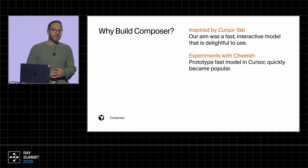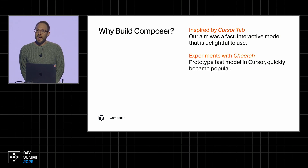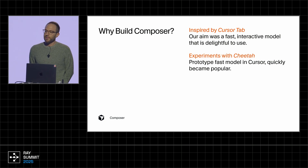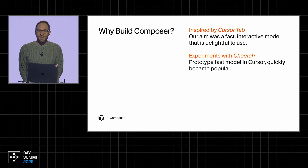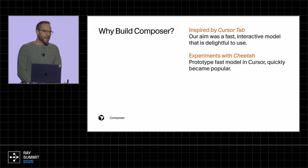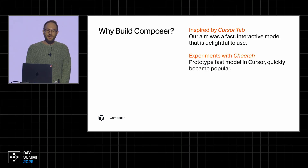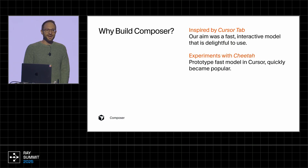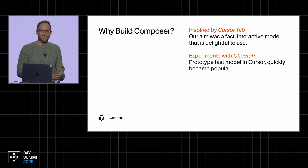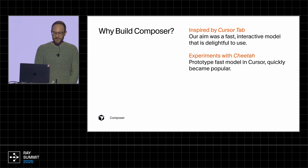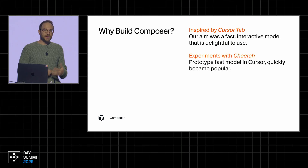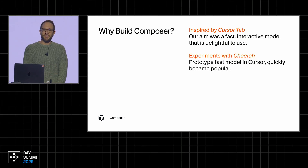We wanted to build an agent model that would have a similar experience. We built a prototype model which we called Cheetah, that had a fast experience for agentic coding. This model was released as a prototype in the app, and we found that users really liked it. We had a lot of comments that this just felt different or felt like alien technology. And so we thought it would be really interesting to build a model that was much smarter but maintained the same efficiency.